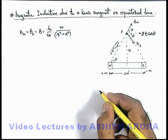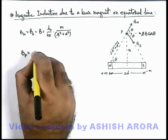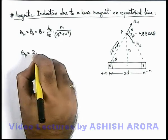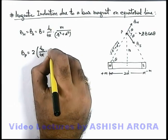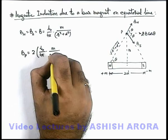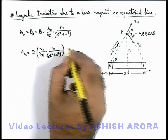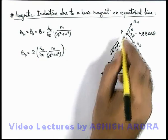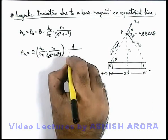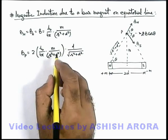Now for the net magnetic induction at point P we can write 2B cos theta, this will be twice of μ₀ over 4π, m by r² plus d², multiplied by cos theta. Here cos theta we can substitute as d by root of r² plus d². And here the product of...